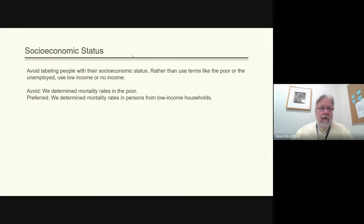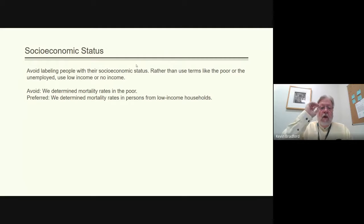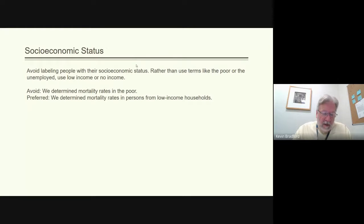The next category is socioeconomic status. Labeling is a form of bias or stereotyping — avoid labeling people with their socioeconomic status. Rather than 'the poor' or 'the unemployed,' use 'low income' or 'no income.' For example, 'the homeless' versus 'persons experiencing homelessness'; or 'we determine mortality rates in the poor' becomes 'we determine mortality rates in persons from low-income households.'